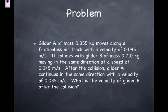So, if we have glider A has a mass of 0.355 kilograms, and it moves along a frictionless air track with a velocity of 0.095 meters per second, and it collides with glider B, has a mass of 0.710 kilograms, and moving in the same direction at a speed of 0.045 meters per second. So they're both moving in the same direction. Glider B is a little slower, so glider A is behind it going to bump into it. After the collision, glider A continues in the same direction with a velocity of 0.035 meters per second, and what's the velocity of glider B after the collision?